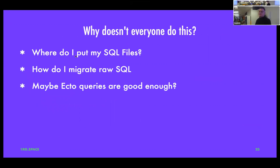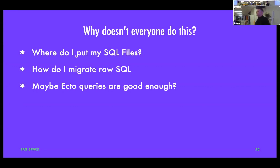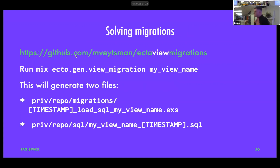So why don't people do this? You've probably not seen many views in Phoenix apps. I think there are three reasons. The first is: where do you put the SQL files? What's great about frameworks is they tell you where to put stuff, and it's not obvious where to store the SQL — is it in your migrations? The second is how does it interact with migrations on rollback. And the third reason is maybe this is overkill and you could do it all with Ecto queries. I've tried. I found the ways of expressing things, especially the neighborhood stuff, were not as expressive in pure Ecto queries.